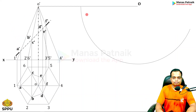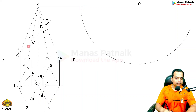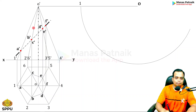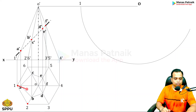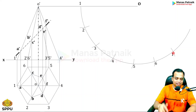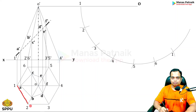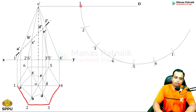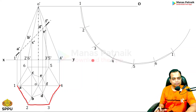Once the arc is made, mark point one on it. The distance between consecutive base points is 30 mm, so with one as center cut an arc to get point two, then two as center to get three, and so on through four, five, six, and back to one. Join consecutive points with straight lines — it's not a cone so these are straight edges, giving you one-two, two-three, three-four, and so on.